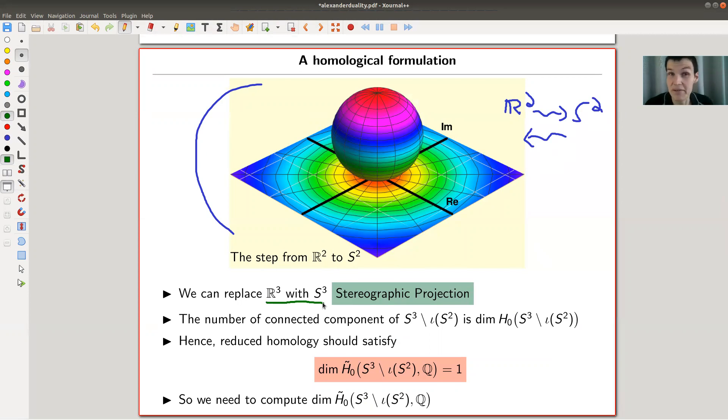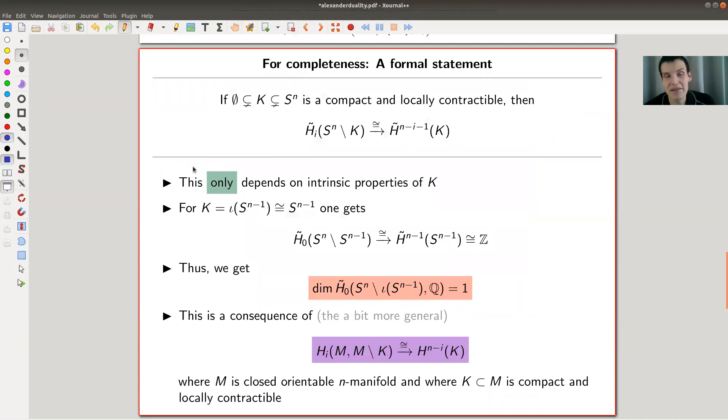And the point is now we can measure the number of connected components. That's what we want. The number of connected components of this piece. That's what we're interested in right now. As I said, we just replaced R³ with S³. That's no big deal. But the number of components is counted by the dimension of the homology of the zeroes. So what we want to know is the zeroth homology of this space. And it turns out that the right formulation uses reduced homology, which is then just saying that the reduced homology is of dimension one. Why? Because homology should count connected components should be of dimension two. So if you get rid of one, because you take the reduced homology, it should be of dimension one. So the statement would follow if we could prove that the reduced homology of this space is of dimension one.